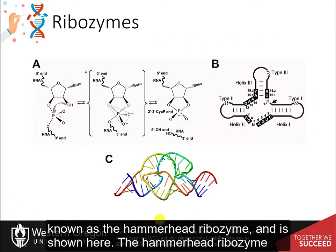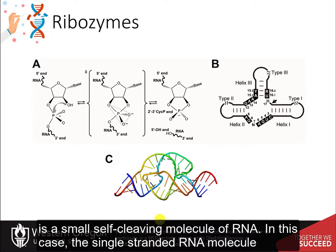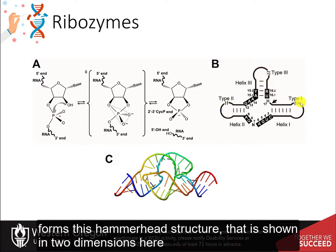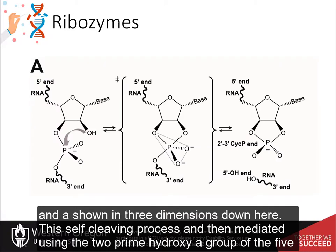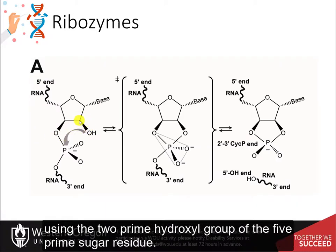The hammerhead ribozyme is a small, self-cleaving molecule of RNA. The single-stranded RNA molecule forms this hammerhead structure that is shown in two dimensions here and is shown in three dimensions below. This self-cleaving process is then mediated using the 2' hydroxyl group.